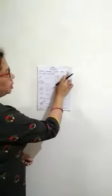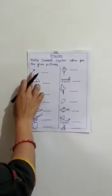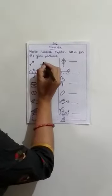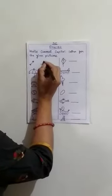Write the correct capital letter for the given picture. What is this? This is an arrow. A for arrow, so here we will write capital A.